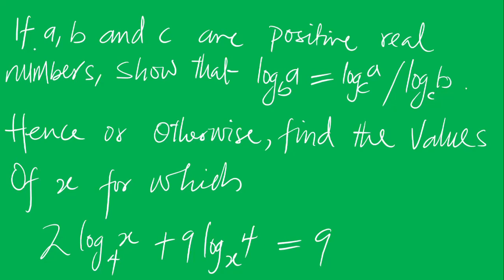If A, B, and C are positive real numbers, show that log A base B is equal to log A base C divided by log B base C. Hence, or otherwise, find the values of X for which 2 log X base 4 plus 9 log 4 base X is equal to 9.